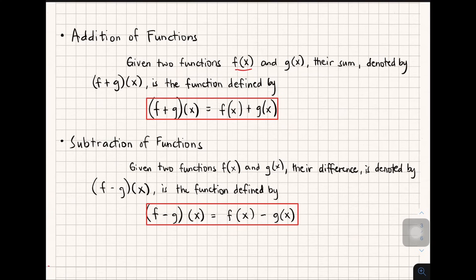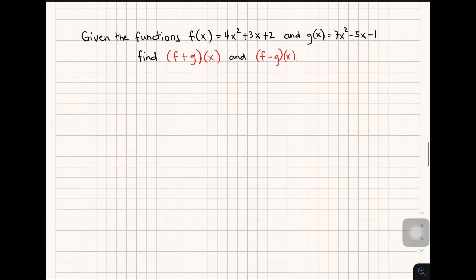For the addition of functions, given two functions f of x and g of x, their sum is denoted by f plus g of x, using the formula f plus g of x equals f of x plus g of x. For subtraction, given two functions f of x and g of x, their difference is denoted by f minus g of x.